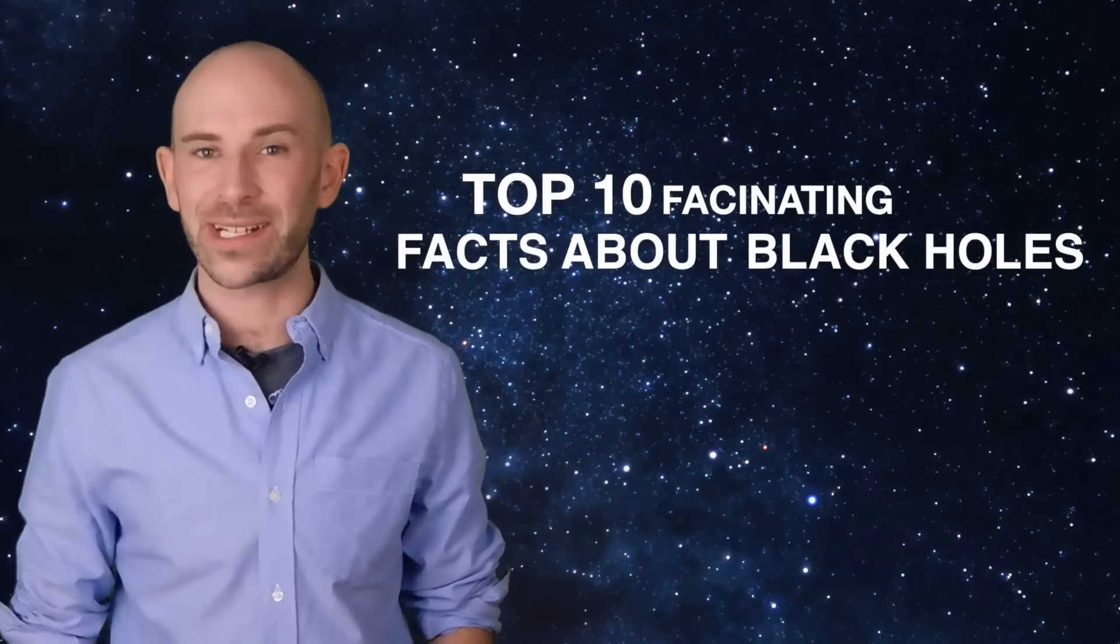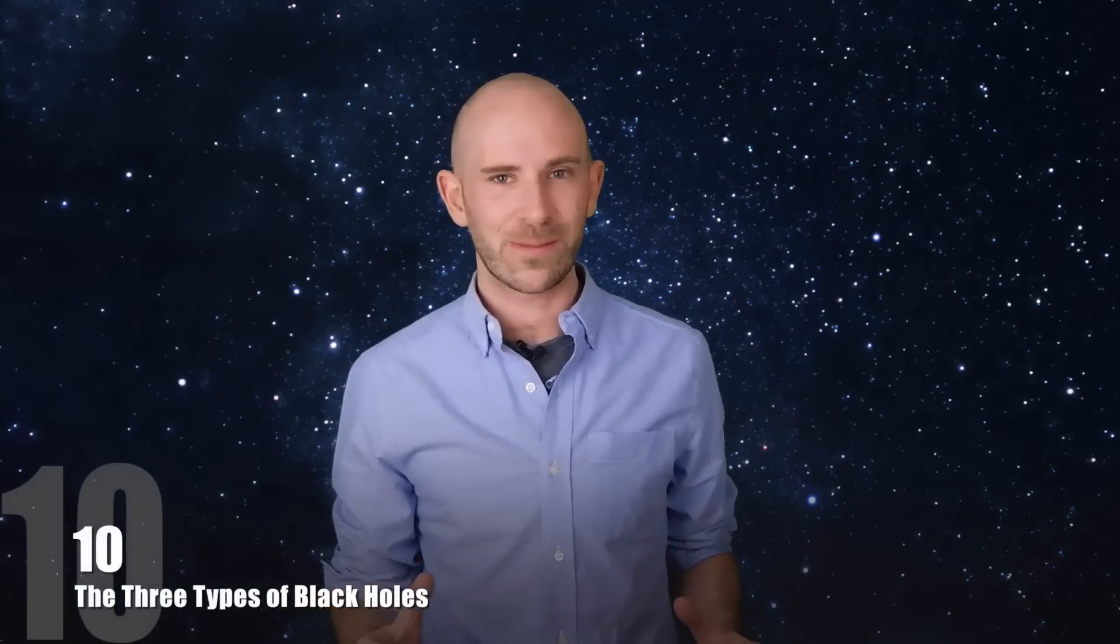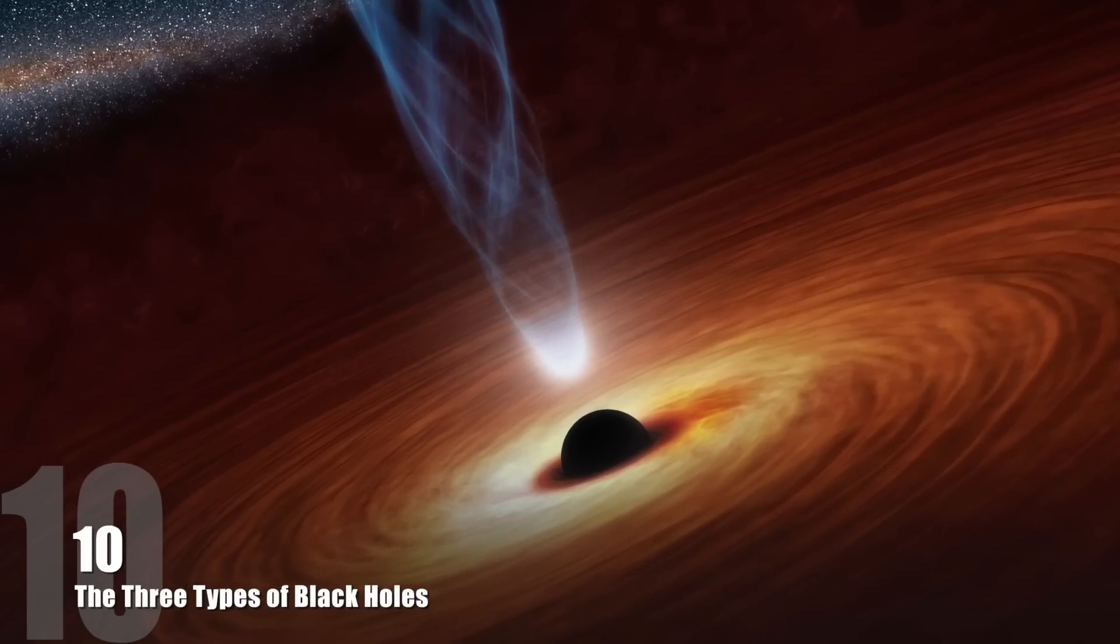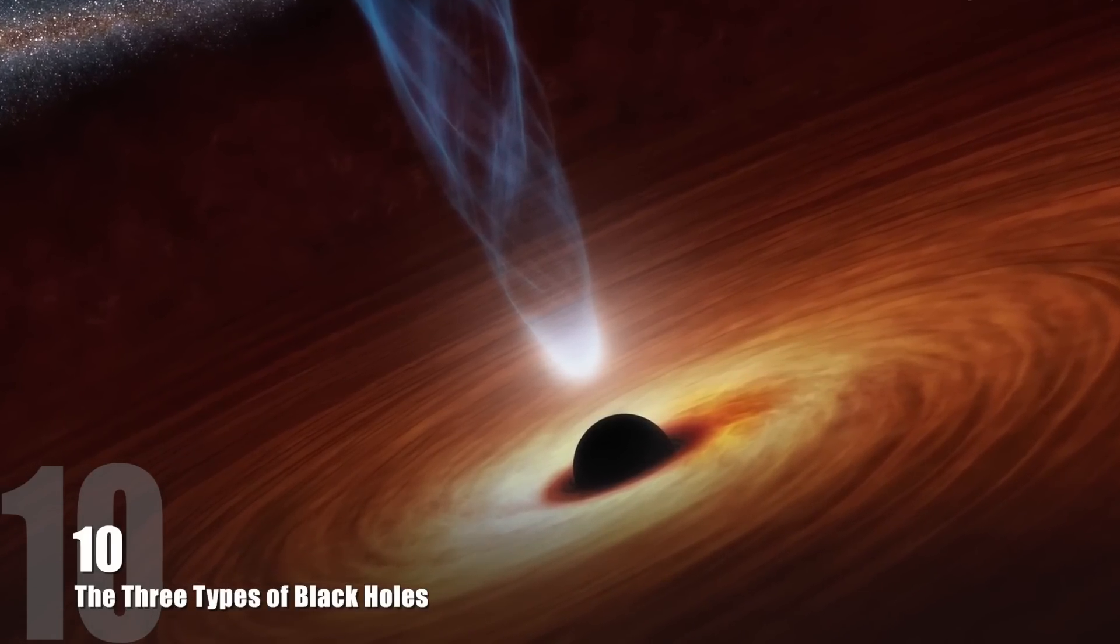10. The Three Types of Black Holes. The first type of black hole is called a stellar black hole and they are the smallest of the trio. They are created when a star that is larger than our sun collapses and continues to fall in on itself.